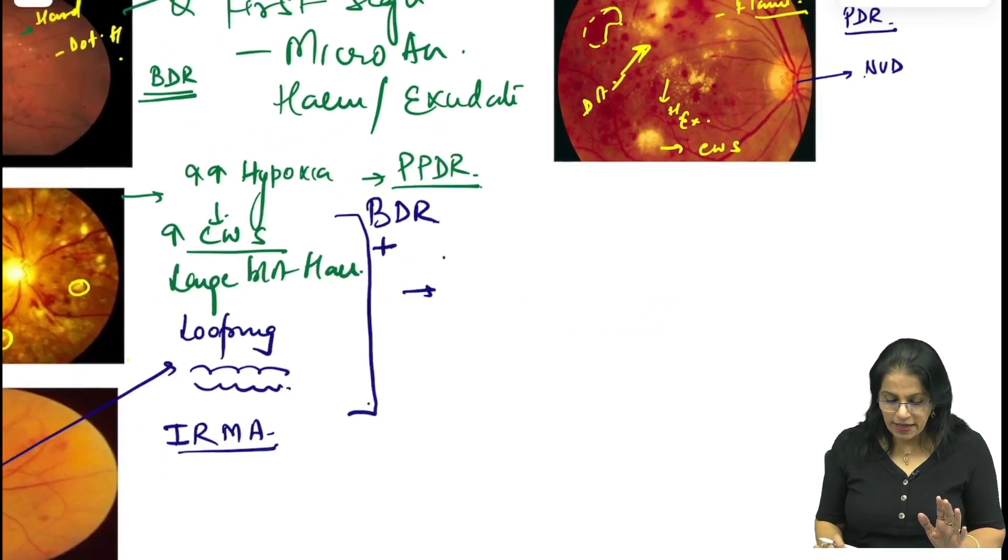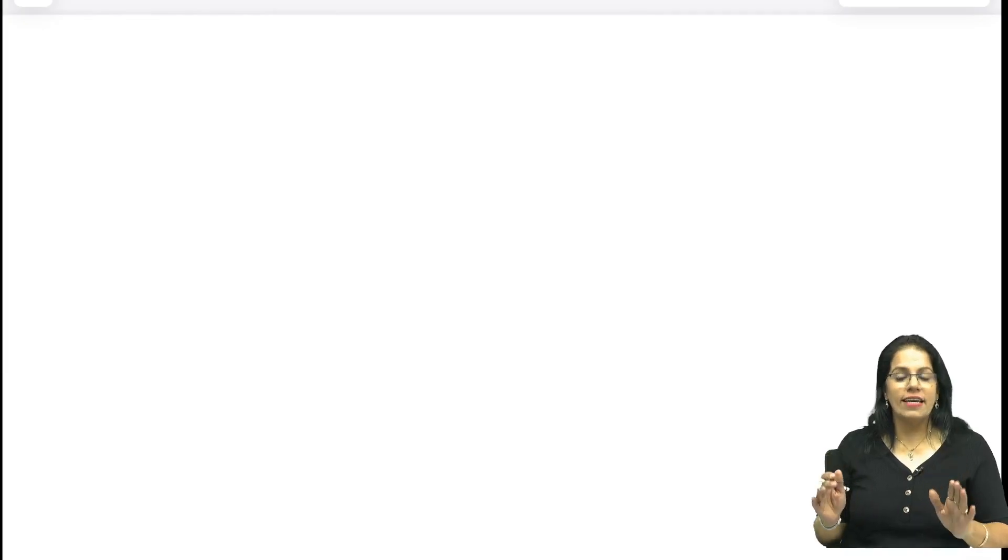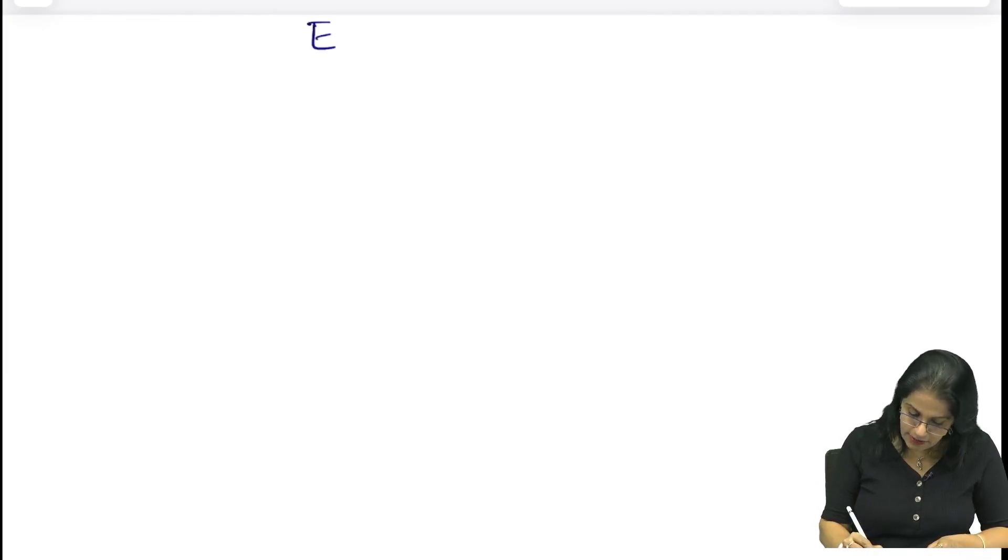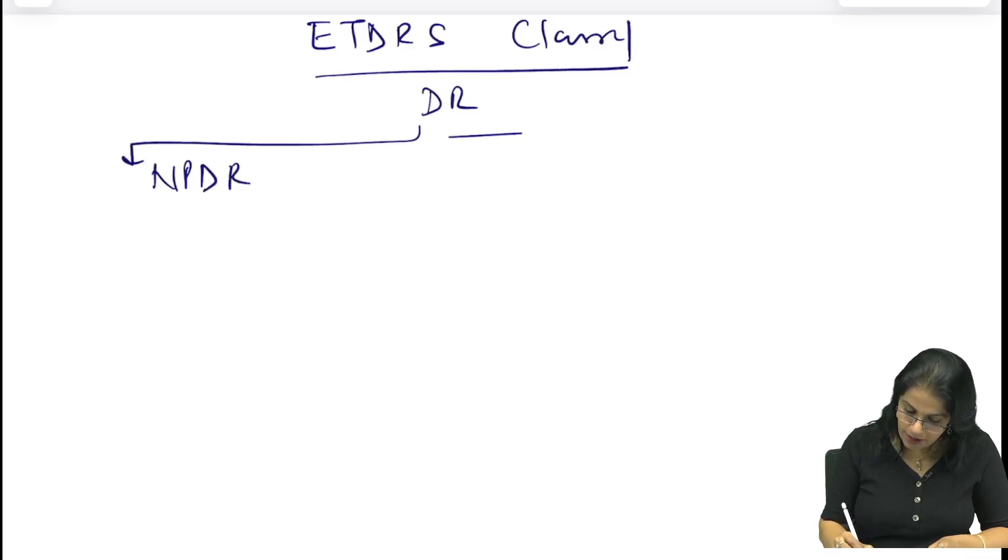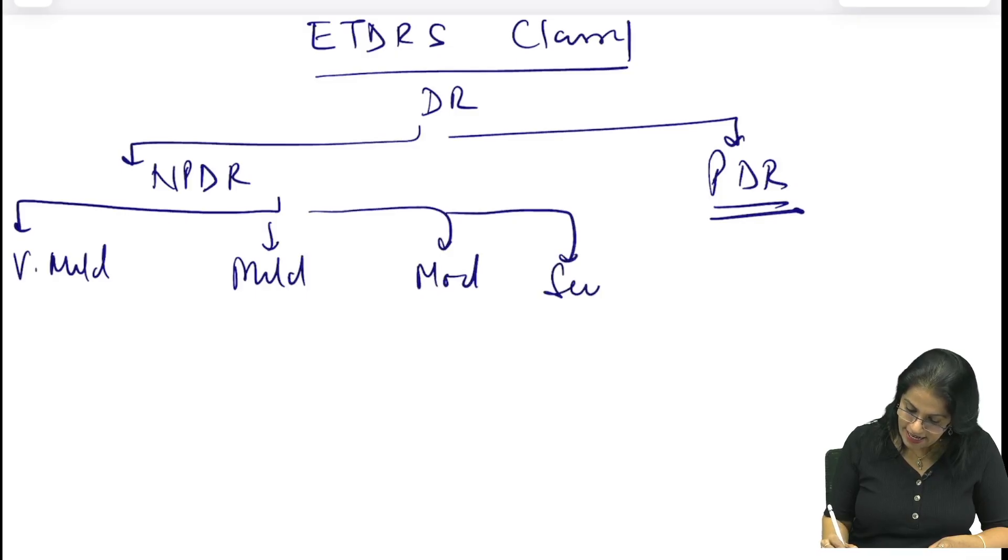Clinical feature is staging ke alawa aur ek staging bohot zaroori hai jaana. Ab hum log wo padh lete hai. Wo bhi similar hi hai iske lekin samajhte hai kya antar hai. So next likhenge, next likhte hai ETDRS classification. ETDRS classification me saath yaad kara do, main aasan tarika se yaad kara rahi hu. Is me kya karte hai? Hum diabetic retinopathy ko 2 groups me divide kiya - non-proliferative DR aur proliferative DR. Ab proliferative to aapko pata hai neovascularization hai. Non-proliferative ko phir divide karo - very mild, mild, moderate, severe and very severe.